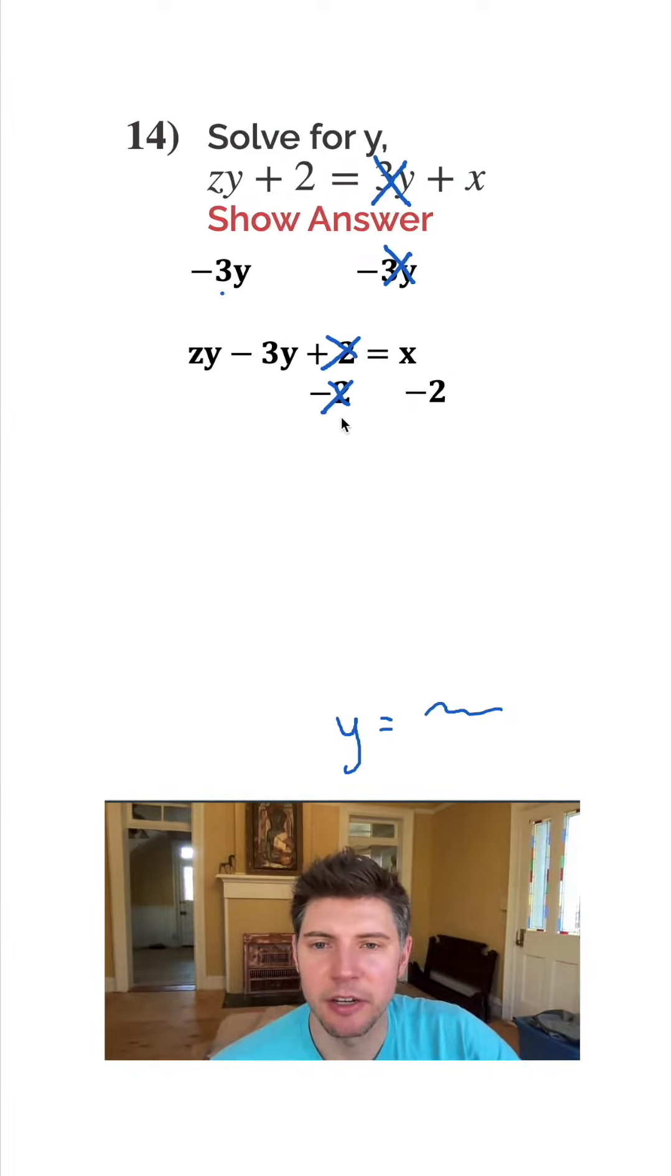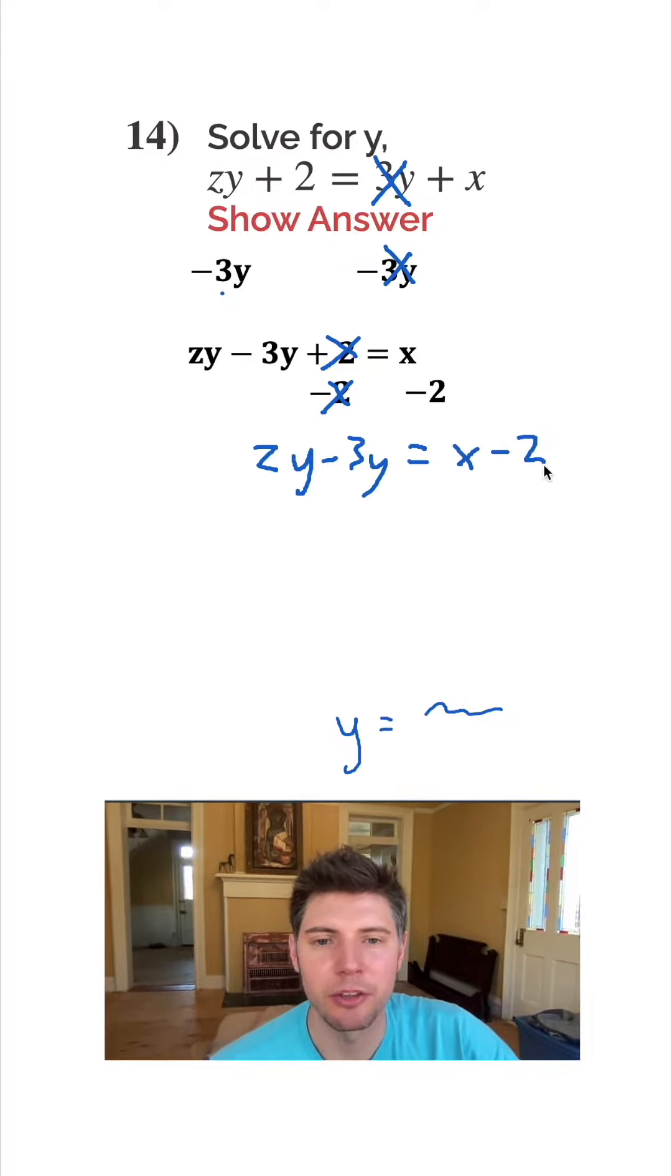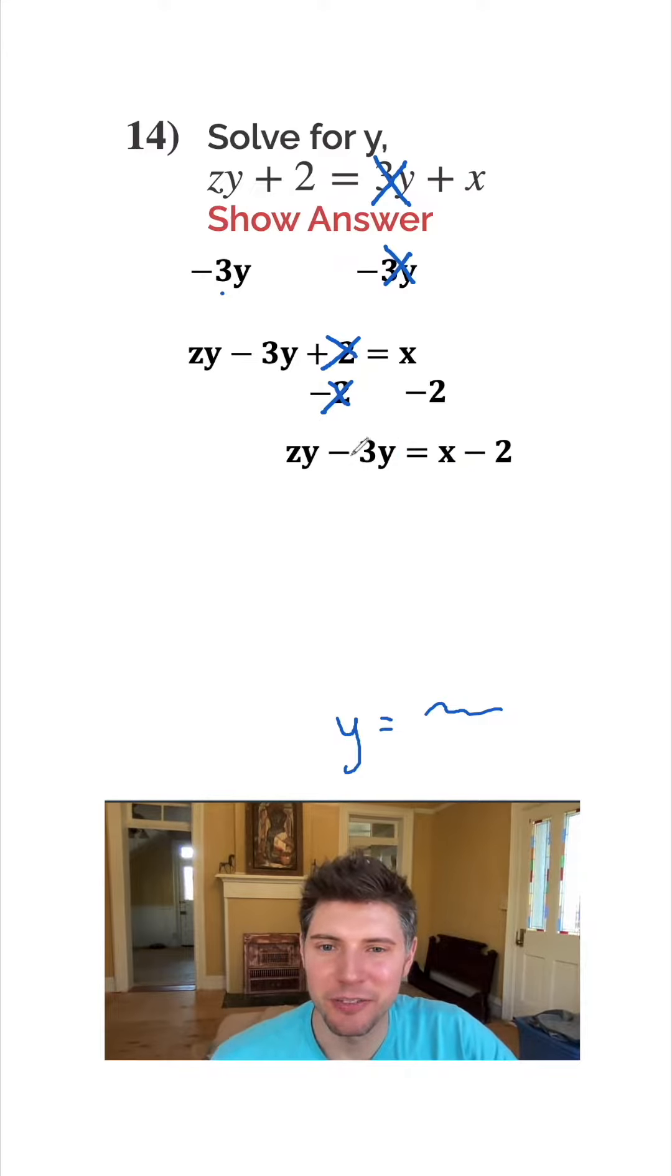These two are going to cancel out right here which gives me zy minus 3y on the left equals x minus 2 on the right. Now we have all the y's on the left hand side but we need it to be a single y. Well the way we do that is we're going to factor a y out.